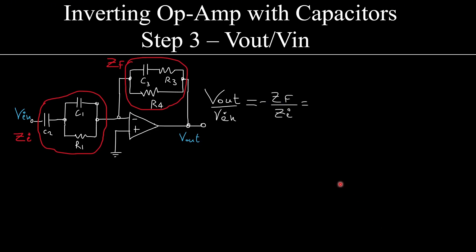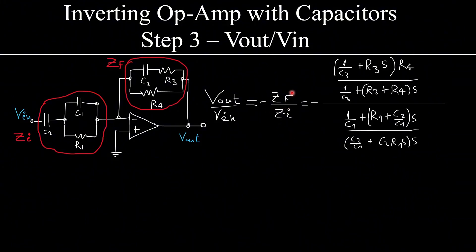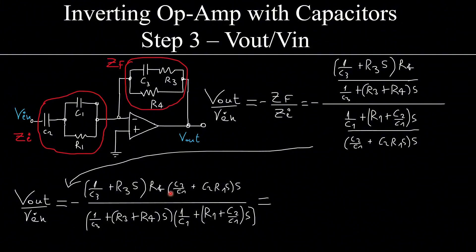Now I am ready to go to step number three, where we have to say that the output over the input is going to be minus Zf over Zi. So I just apply my formula for the inverting configuration. Again, I put Zf this and Zi this - I found them previously in step number two - and now I do nothing but algebra, this times this over this times this.